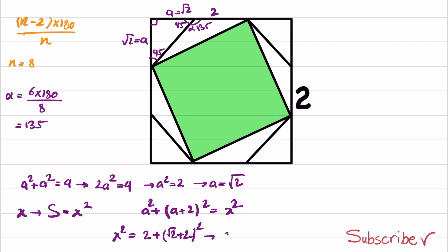And from this, x squared is equal to 2 plus 2 plus 4 plus 4 times square root of 2. And from this, x squared is equal to 8 plus 4 times square root of 2.